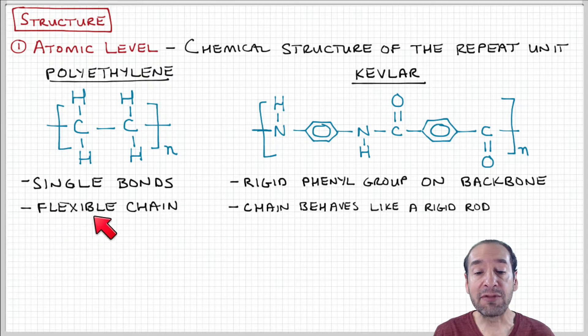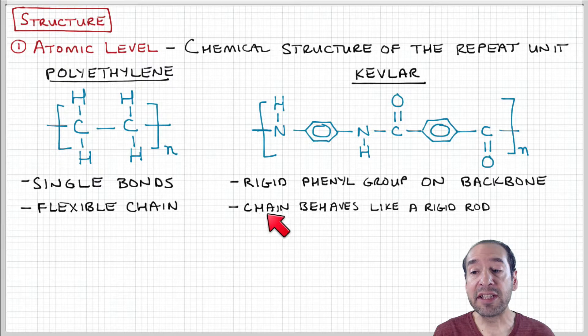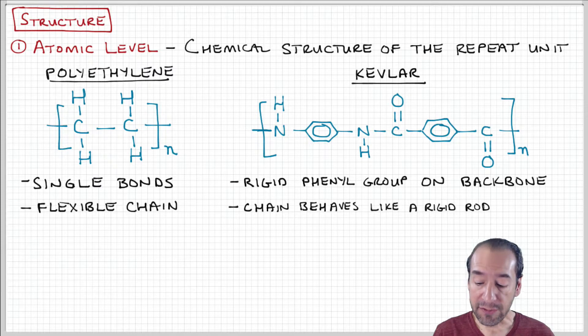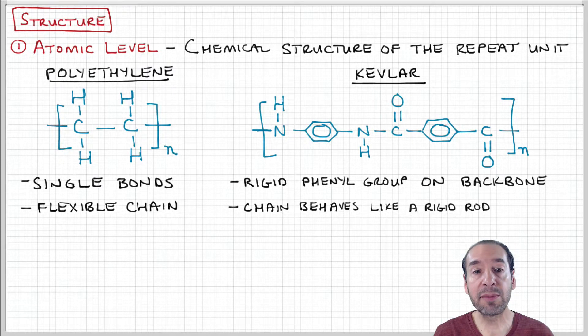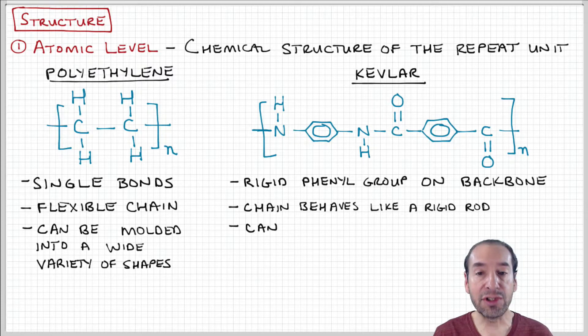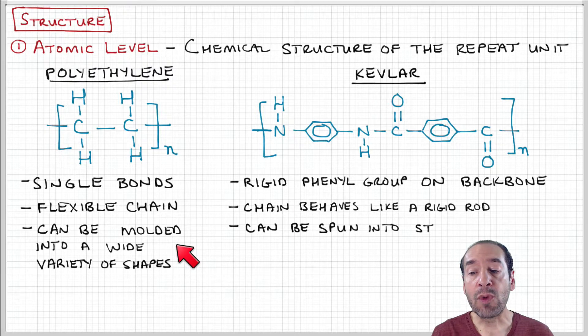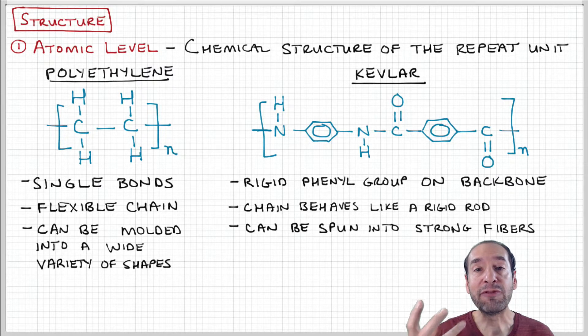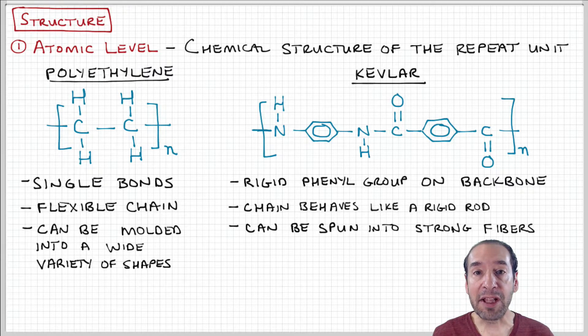Polyethylene has a flexible chain, whereas Kevlar has a more rigid chain that behaves almost like a rigid rod. As a result of this behavior at the atomic level, these polymers have very different physical properties. Polyethylene can be heated, melted, and molded into a variety of shapes, whereas Kevlar can't be melted because it would degrade before reaching a melting temperature.